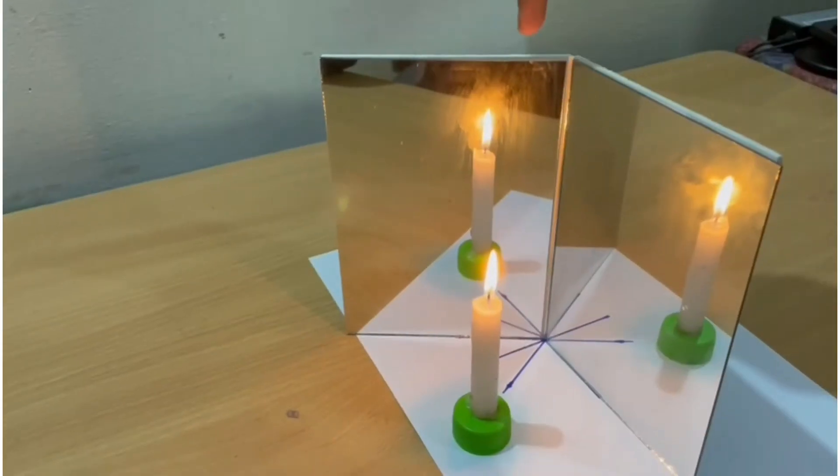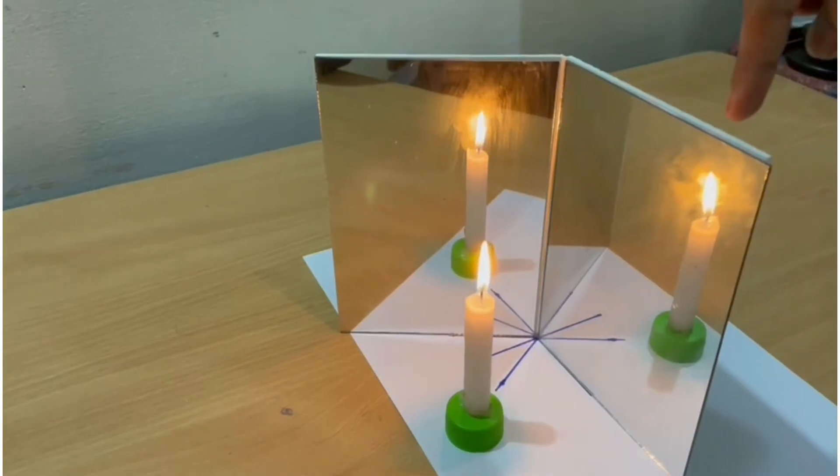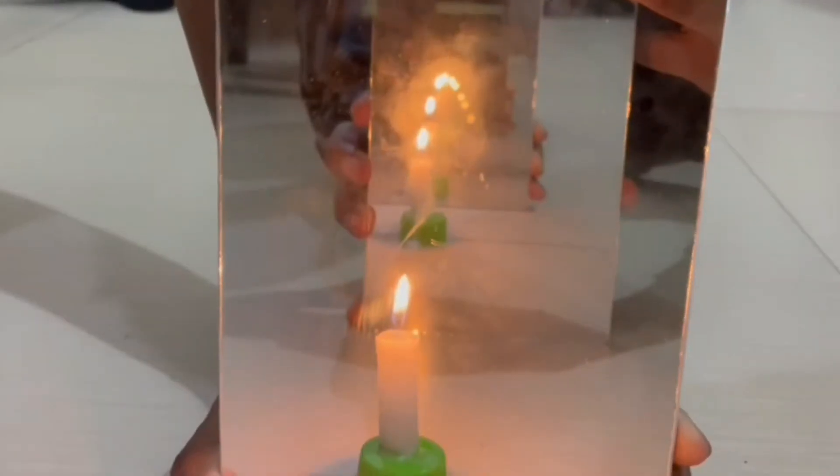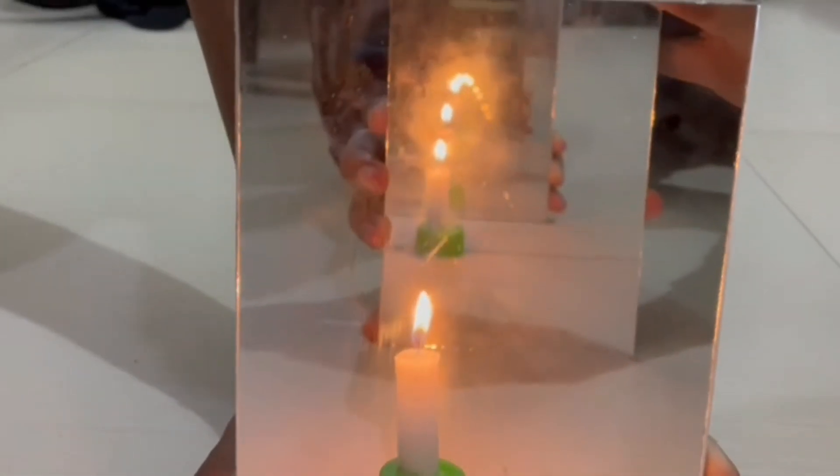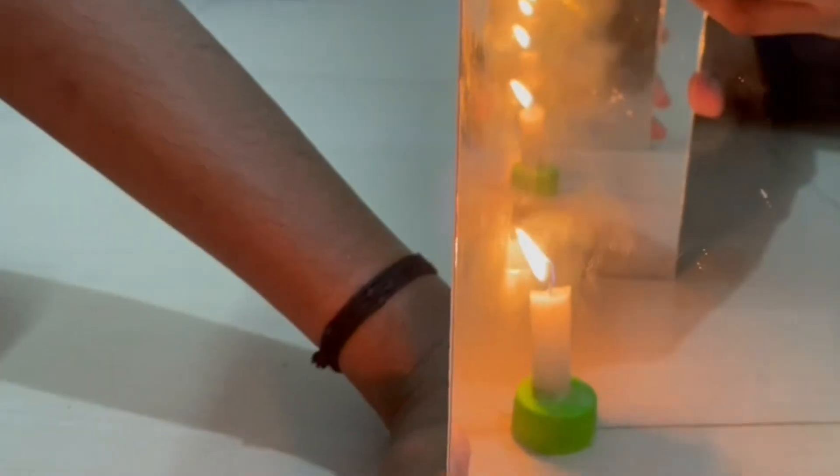If the mirrors are inclined at an angle of 120 degrees, the number of images formed is 2. Now if a candle is placed between two parallel mirrors facing each other, then an infinite number of images are formed.